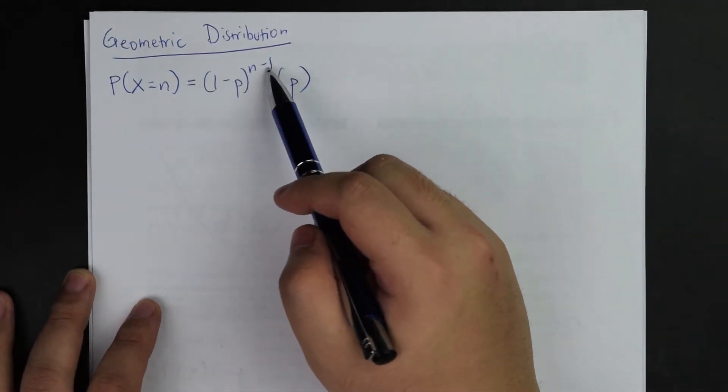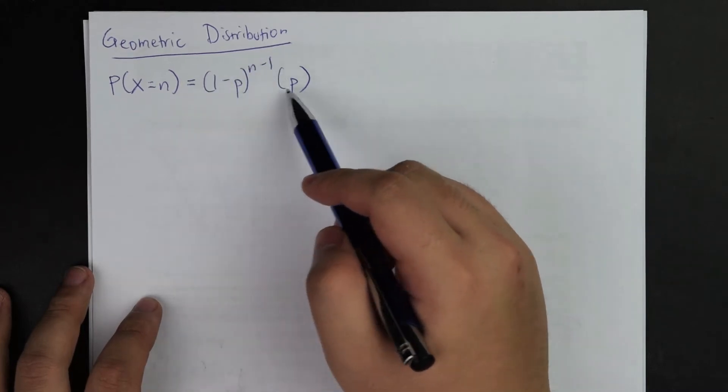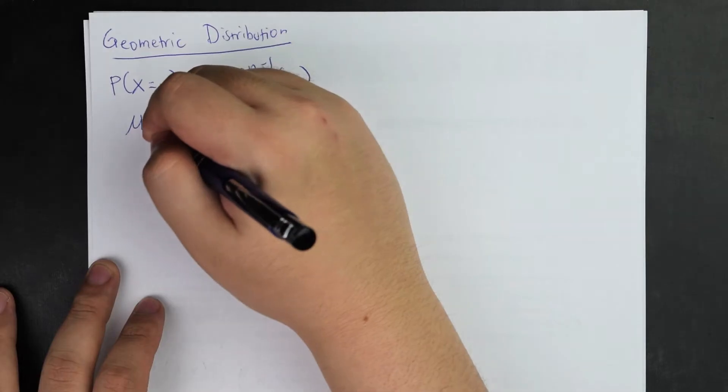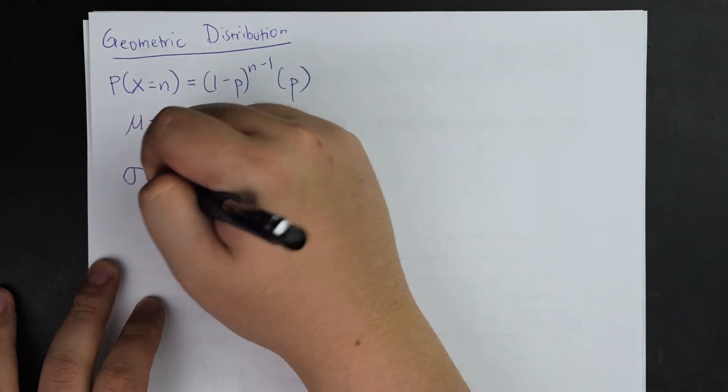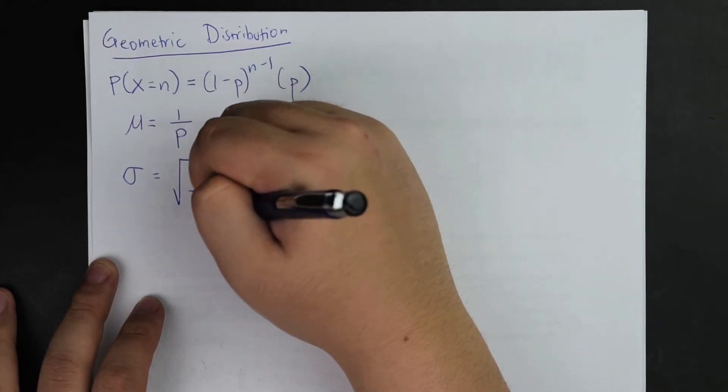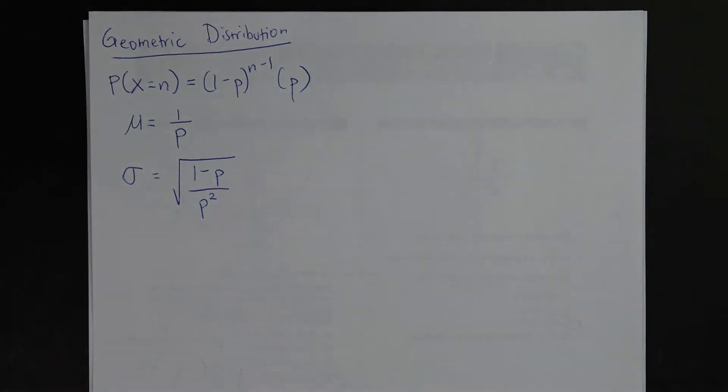The probability is (1-p)^(n-1) times p. And this is all the possible failures before your first success. The mean for these geometric distributions will always be 1/p and standard deviation will be sqrt((1-p)/p^2). That is the equation format for geometric distribution.